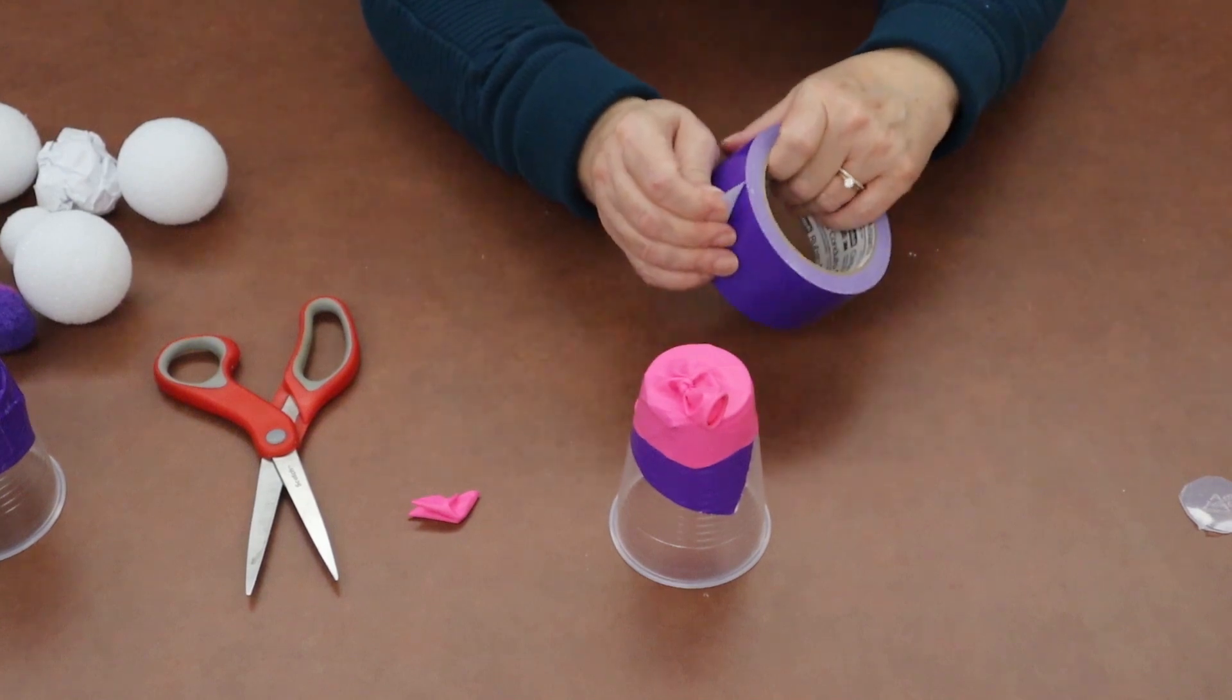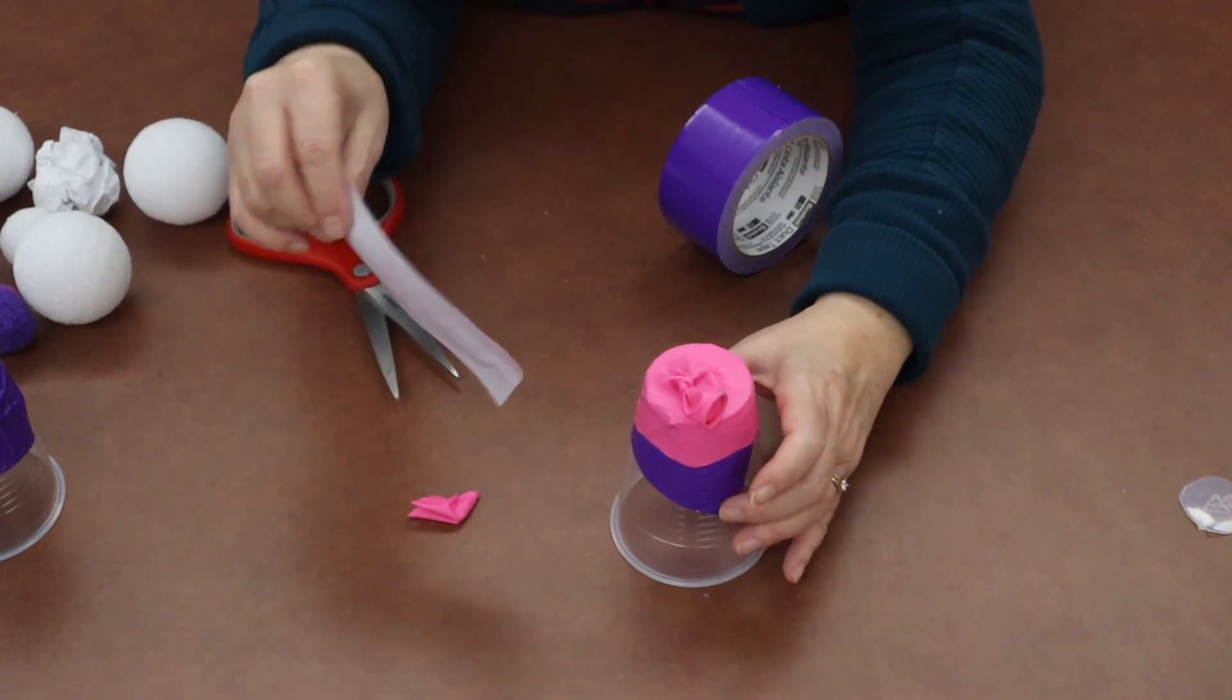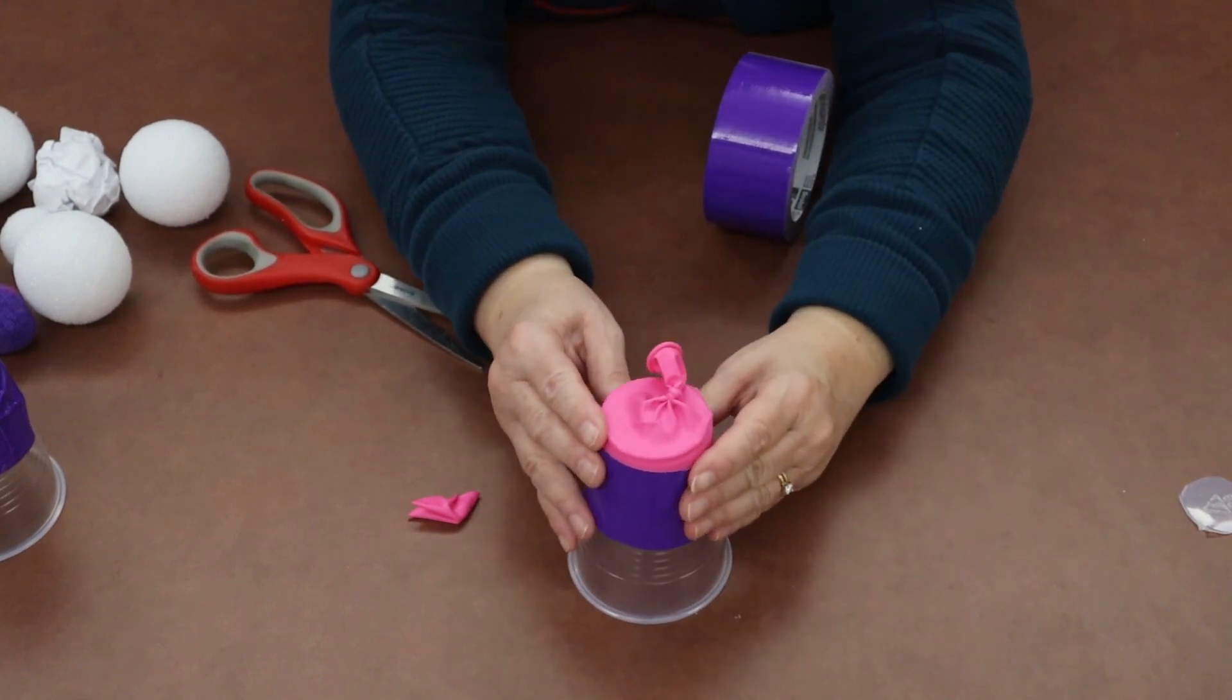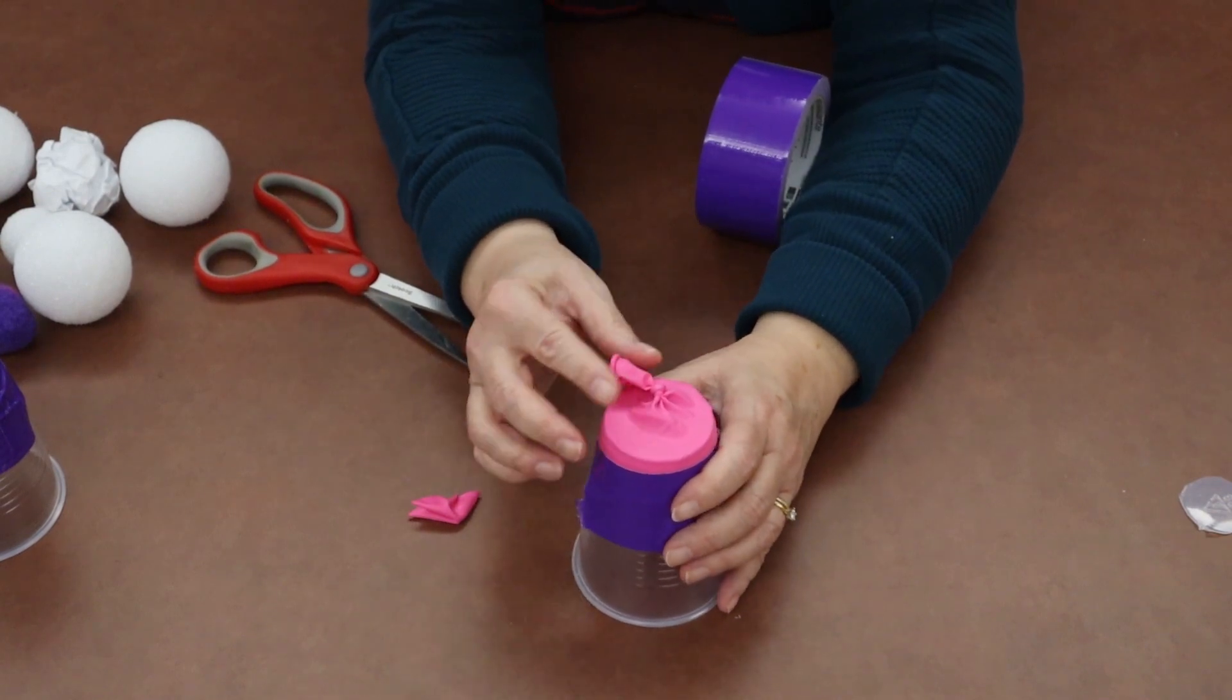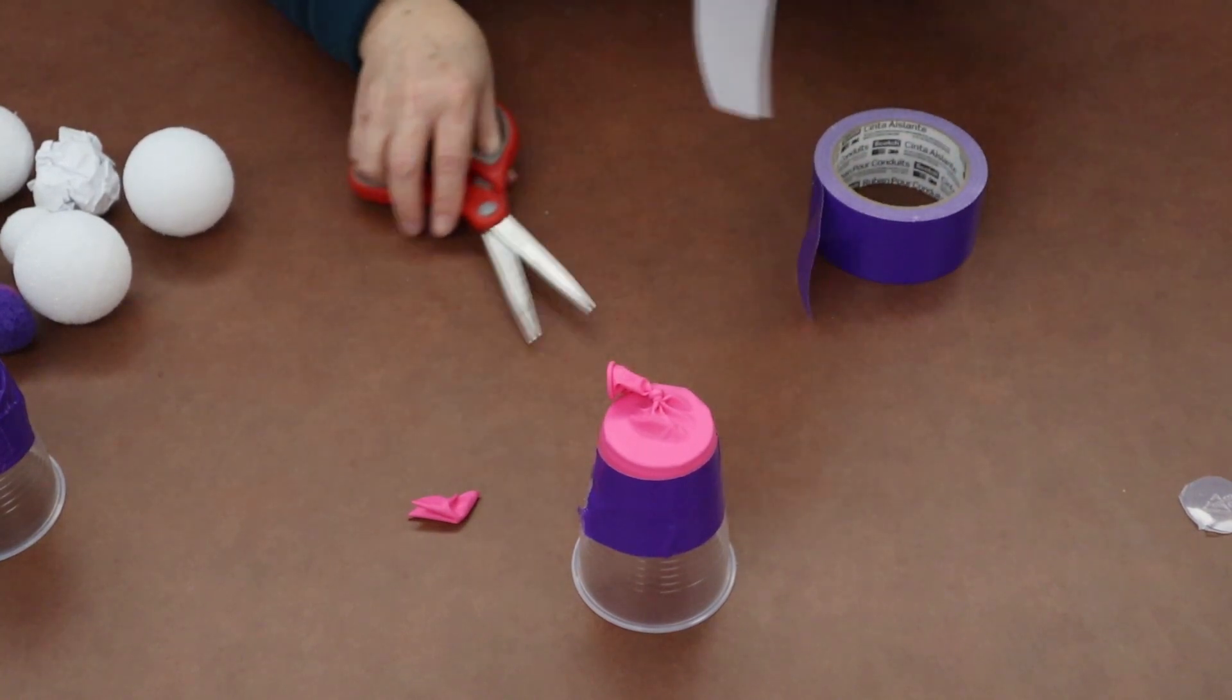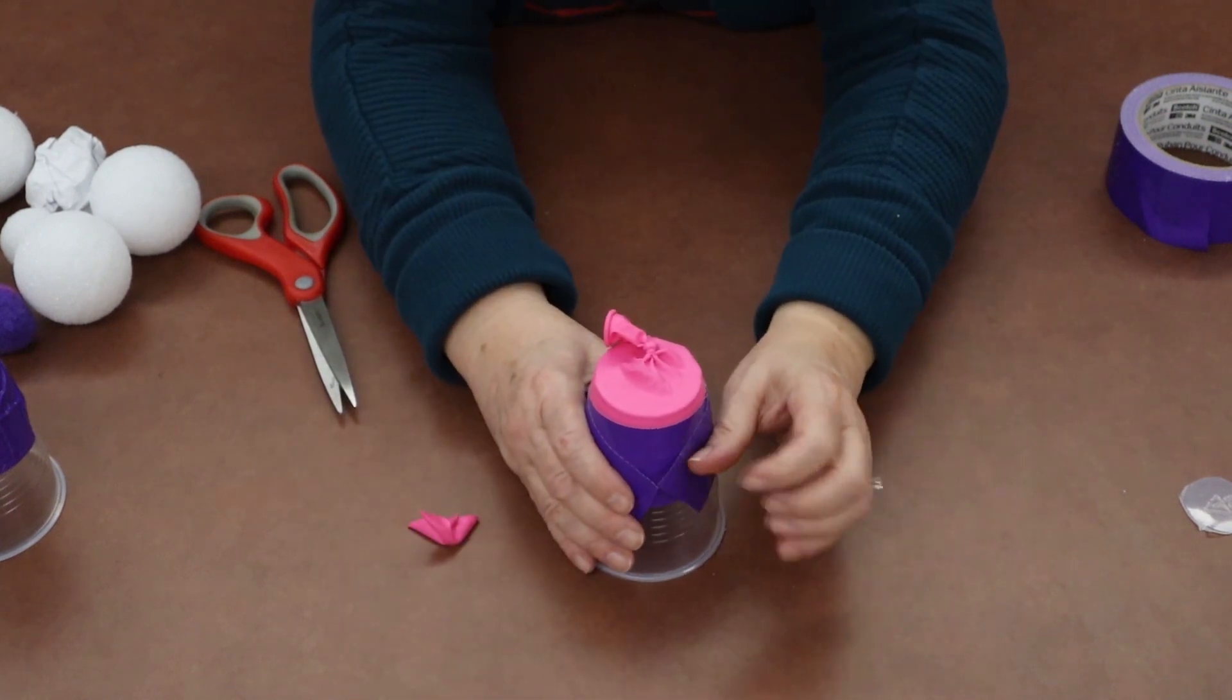And then cut a couple of long pieces or tear, whichever works best for you, of duct tape and just tape your balloon to your shooter. And you want to make sure you've got it stretched. Not super tight, but stretch it across the end of the cup.